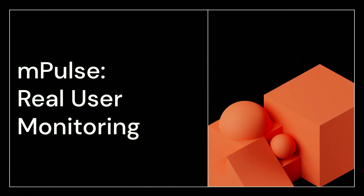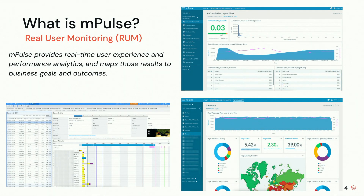I work on a product called M-Pulse. It is a real user monitoring or RUM product at Akamai. The goal of M-Pulse is web performance analytics. We measure all of the user experiences that are happening on web pages when they're one of our customers. We compare user experiences like page load time, how long it took to show visuals, how many resources were fetched, and we map these to business outcomes like bounce rate, session duration, and conversion rates.